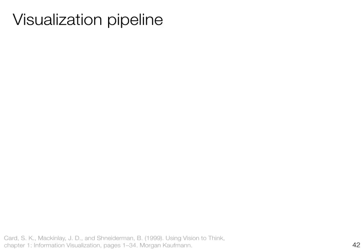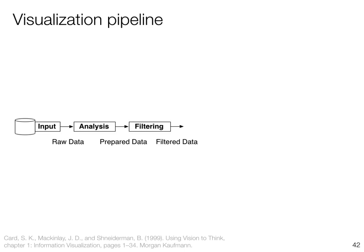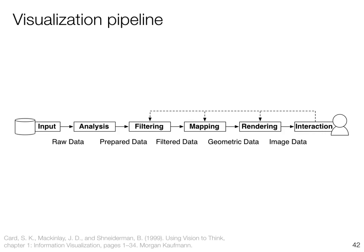Another concept for thinking about visualization design, development, and evaluation is the visualization pipeline. It provides a linear step-by-step procedure moving from raw data — the input — that is analyzed into prepared data, maybe filtered to a subset relevant for a given task or project, then mapped to geometric forms, rendered on the screen, and finally equipped with interaction. It's a simplified model, but it gives us a sense of how the data we're working with needs to pass through several steps so that it can be represented visually and interacted with.